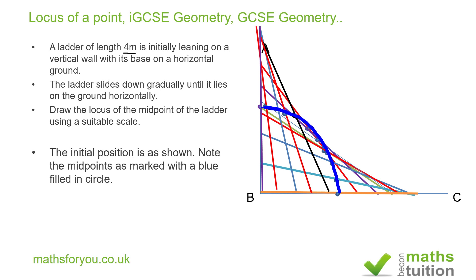What I've drawn is an arc — or if you like, a quadrant. I'll call it arc DE. The radius of this arc is BE, and this radius has a value of two meters. So the locus of the midpoint of this ladder is an arc with a radius of two meters and center at B.